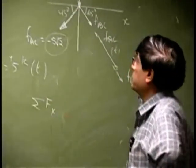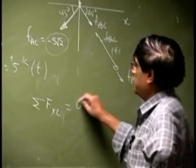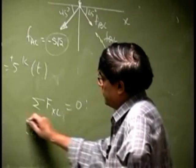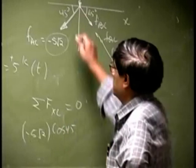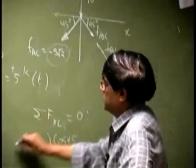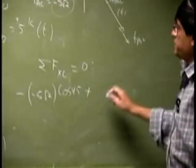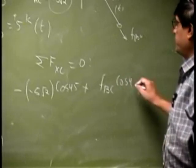We are going to sum the force at the same joint in X direction, which is FXC. And which you get is, you get 5 square root 2. Then you are going to have cosine 45. Then the direction is like this, that is negative.